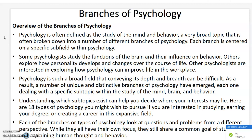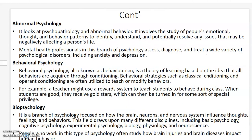Each of the branches or types of psychology looks at questions and problems from a different perspective. While they all have their own focus, they still share the common goal of studying and explaining human thought and behavior. So let's now look at the different branches of psychology, starting with number one: abnormal psychology.